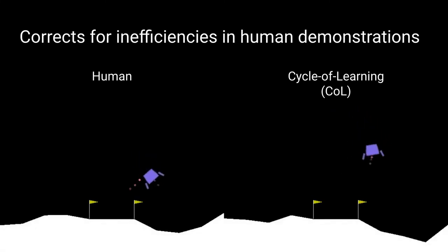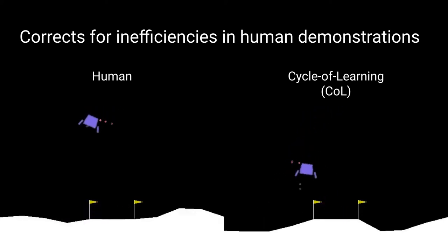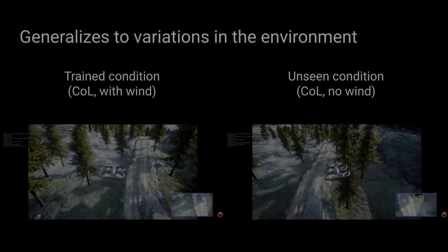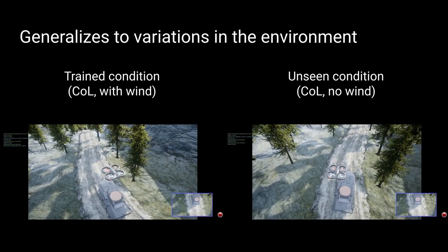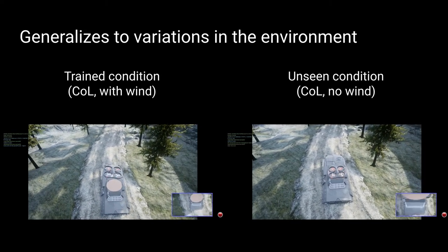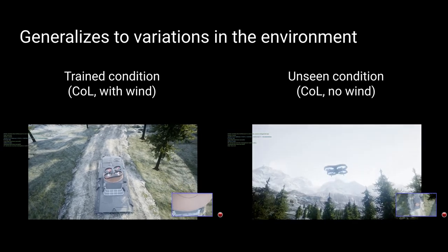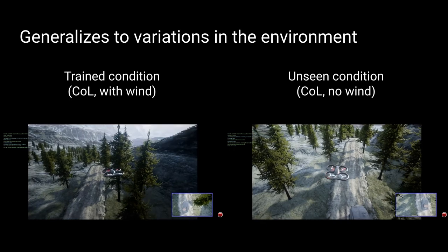This approach leads to policies that correct for inefficiencies in the demonstrated trajectories. It also generalizes to small variations in the environment — for example, for the quadrotor landing task, policies trained with demonstrations from windy episodes are able to generalize to cases without wind.